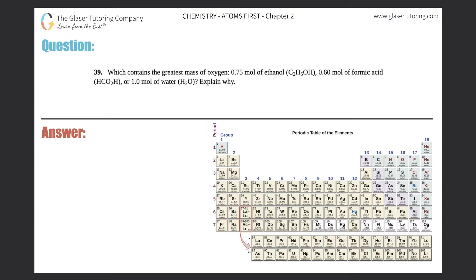Number 39: which contains the greatest mass of oxygen? 0.75 moles of ethanol, which is C2H5OH; 0.6 moles of formic acid, which is HCO2H; or 1 mole of water, H2O? And then explain why.